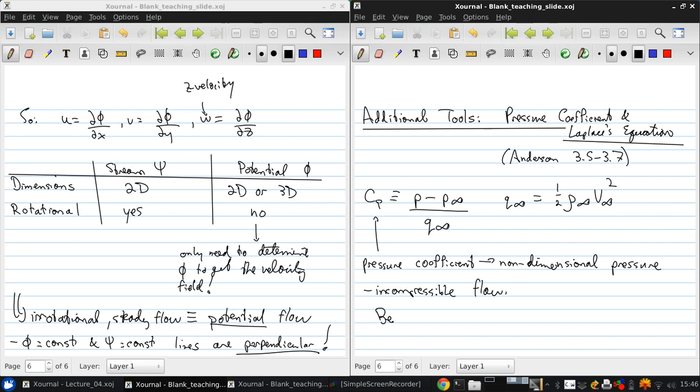Recall that in an incompressible flow, Bernoulli tells us that P infinity plus one-half rho infinity V infinity squared equals P plus one-half rho V squared. This is at any point in the flow field, and this is at the free stream conditions.